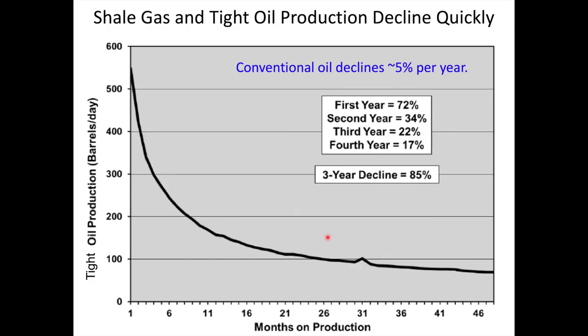One more thing to consider when evaluating shale gas and tight oil is that production of individual wells drops very quickly relative to conventional oil and gas wells. The average decline rate for conventional wells is about five percent per year. In contrast, the average decline rate for fracked and other unconventional wells is 60 to 91 percent over the first three years, at which point decline slows down into an extended but low level of production. The obvious result of these high decline rates is the need to drill more and more new wells to make up for declining production, and this increases the energy needed to produce these fuels as well as the environmental consequences of their production and use.